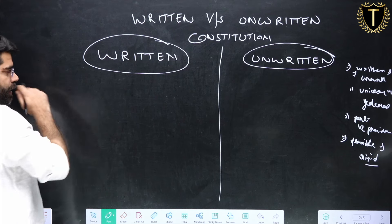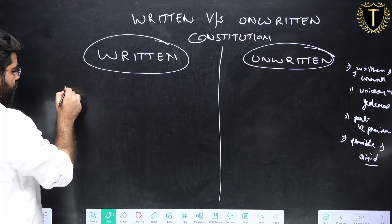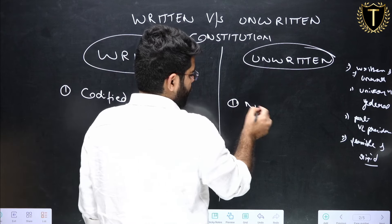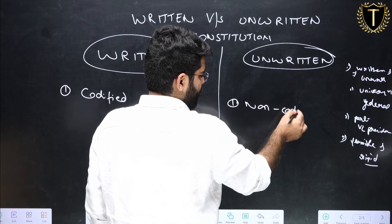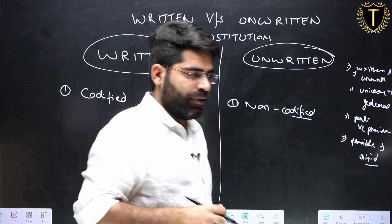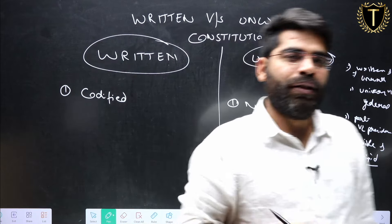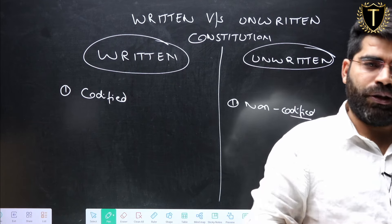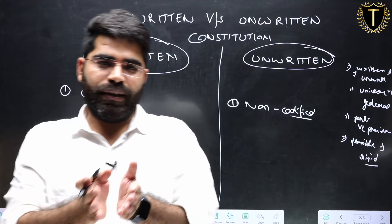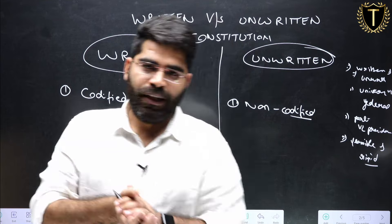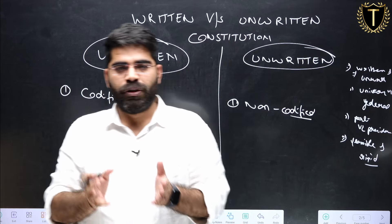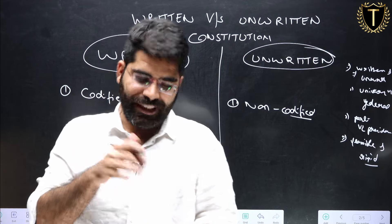The first difference between the written and unwritten constitution is codification — codified versus non-codified. For example, in a country where there is a written constitution, if you go to a library and ask for the Indian constitution, the librarian will provide you with a book. The entire constitution is codified into a single book that you can see and feel.